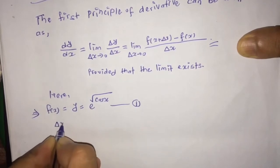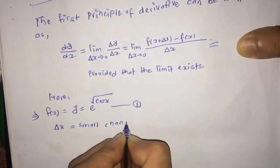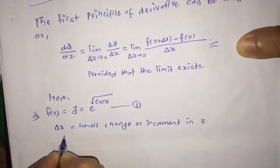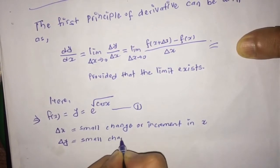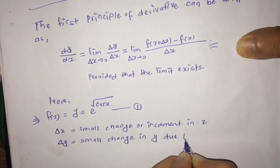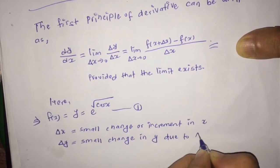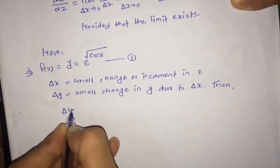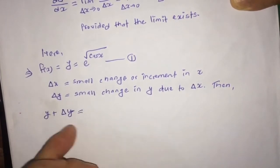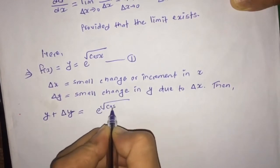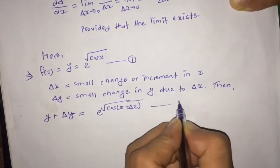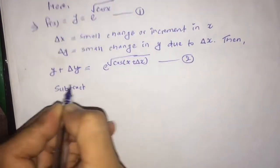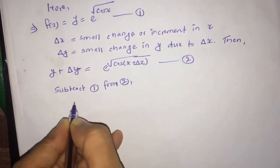Now here, let's suppose y is equal to f(x) is equal to exponential root under cos x — this is equation 1. Also suppose δx is a small change or small increment in x, and δy is a small change in y due to the change in x. Then y + δy is equal to exponential root under cos(x + δx).